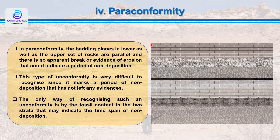In paraconformity, the bedding planes in both the lower and upper sequences of rocks are parallel, and there is no apparent break or evidence of erosion that could indicate a period of non-deposition. This type of unconformity is very difficult to recognize in the field since it marks a period of non-deposition that has not left any evidence. The only way of recognizing such unconformity is by analyzing the fossil contents in both strata, which may indicate the time span of non-deposition.